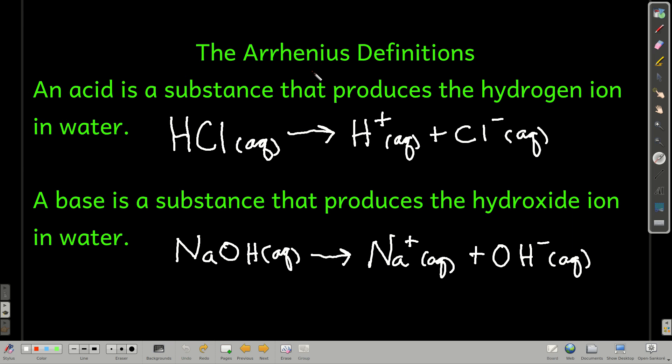The first one is the Arrhenius definition. According to Arrhenius, an acid is something that when you put it into water, it produces the hydrogen ion, H+. For example, if you were to take hydrochloric acid, hydrogen chloride gas, and dissolve it in water, you make hydrochloric acid, and it dissociates into the hydrogen ion and chloride ion. It produces hydrogen ion, so it's an acid.